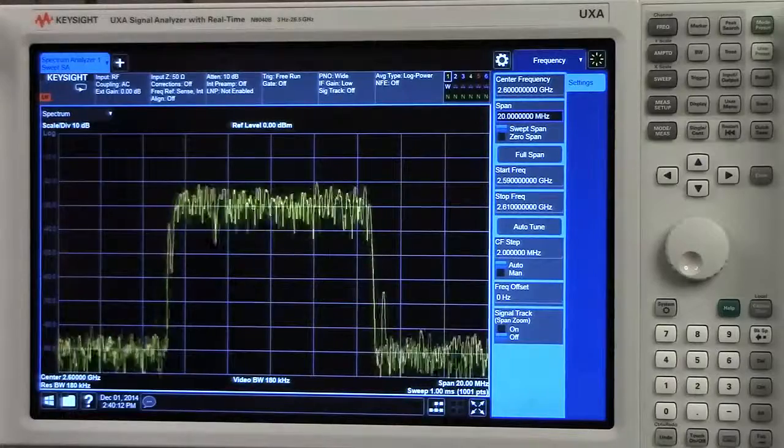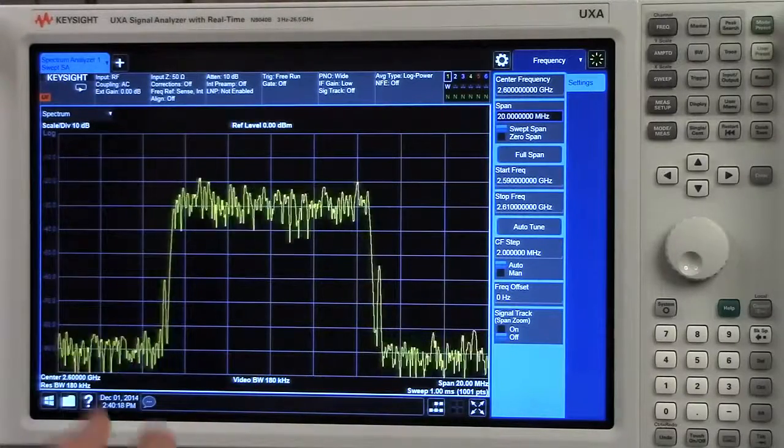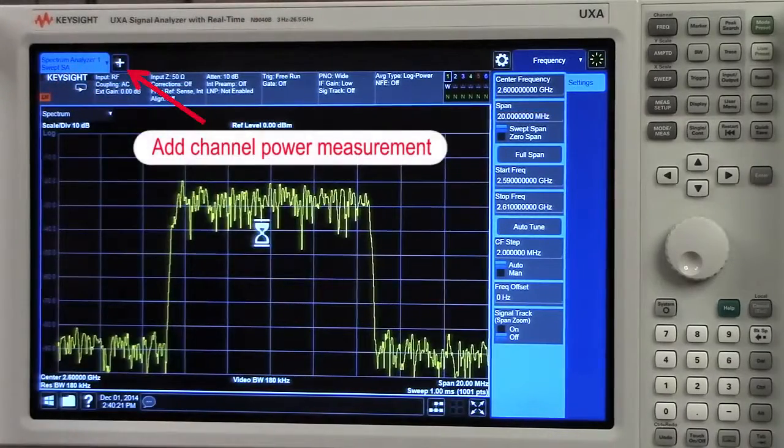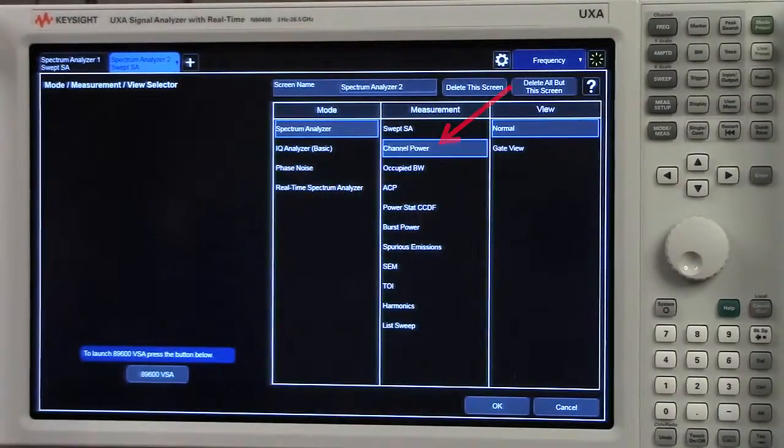We're looking at an LTE 10 MHz downlink signal. First I'm going to add a channel power measurement. Hit the add button, and then I'll drop down into our mode measurement view selector, and I'll select channel power.